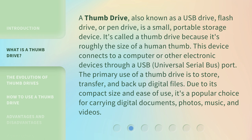A thumb drive, also known as a USB drive, flash drive, or pen drive, is a small, portable storage device. It's called a thumb drive because it's roughly the size of a human thumb. This device connects to a computer or other electronic devices through a USB — universal serial bus — port.